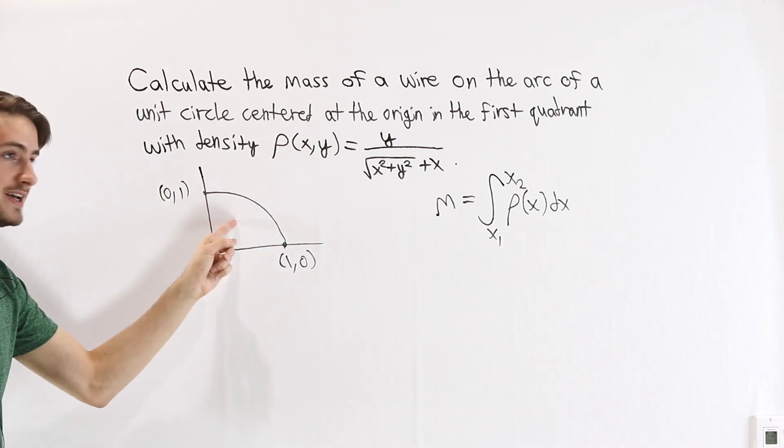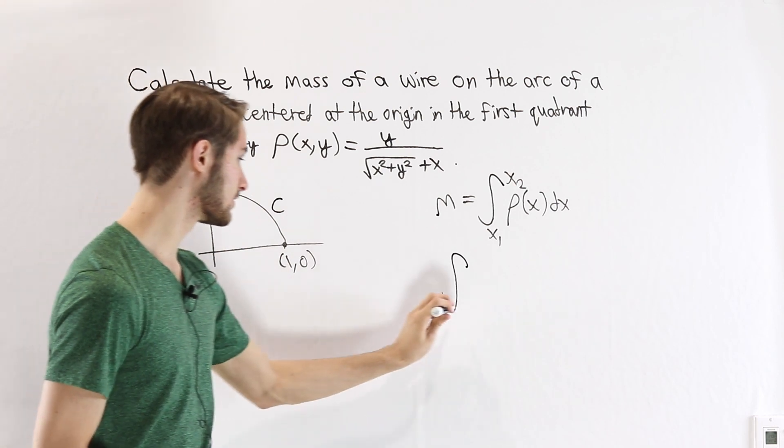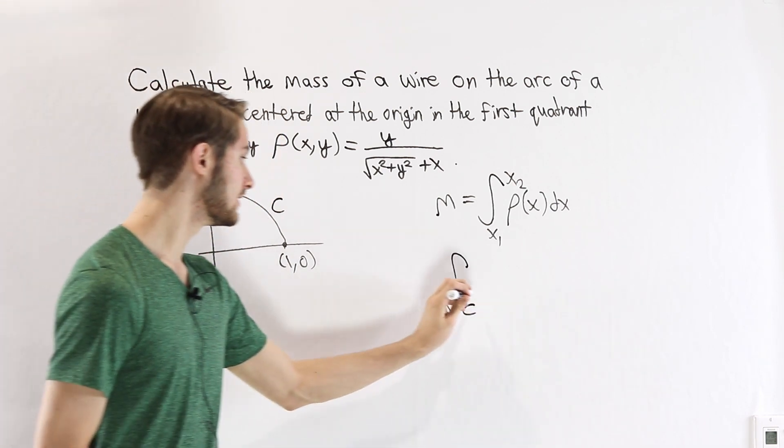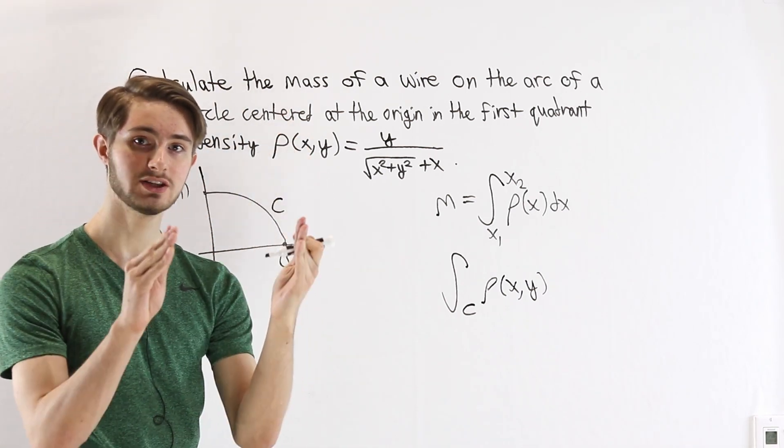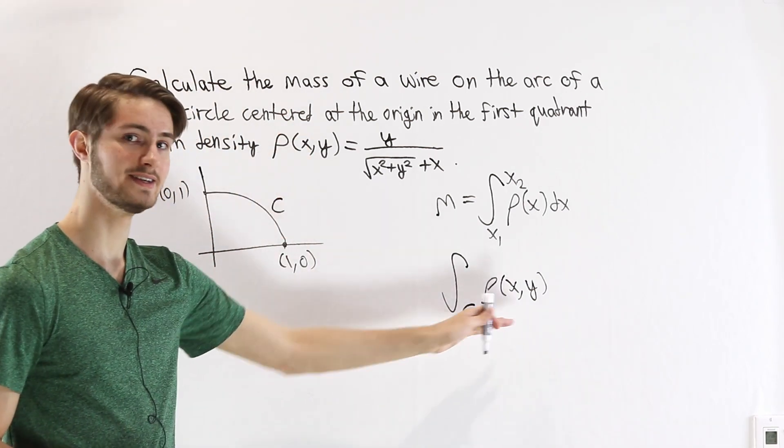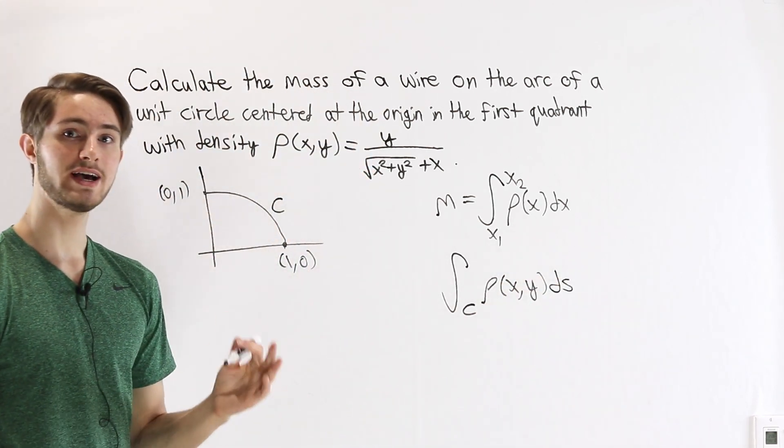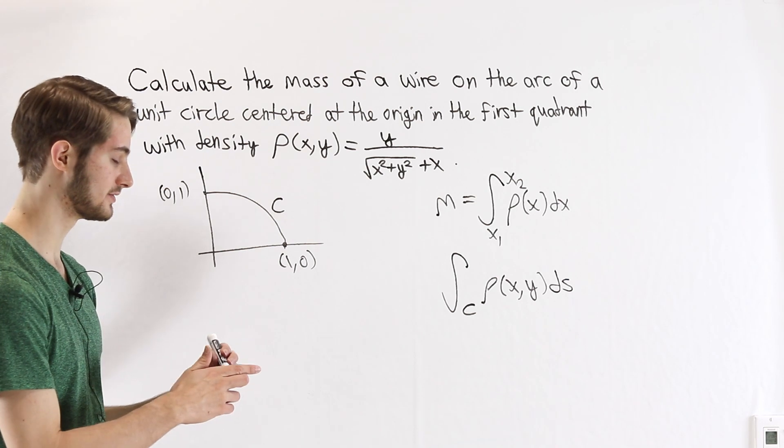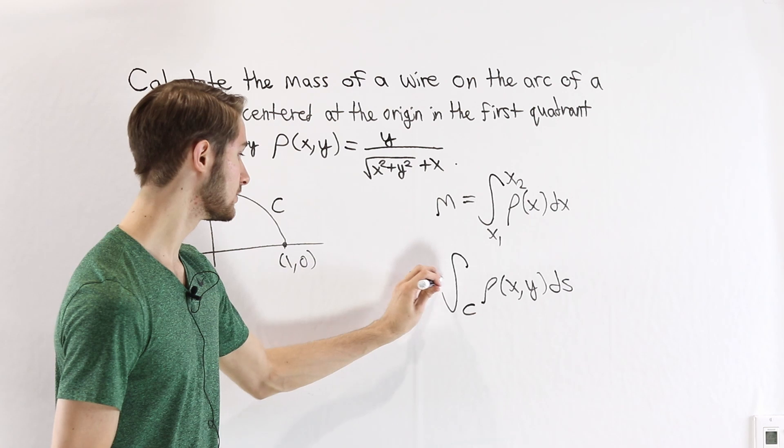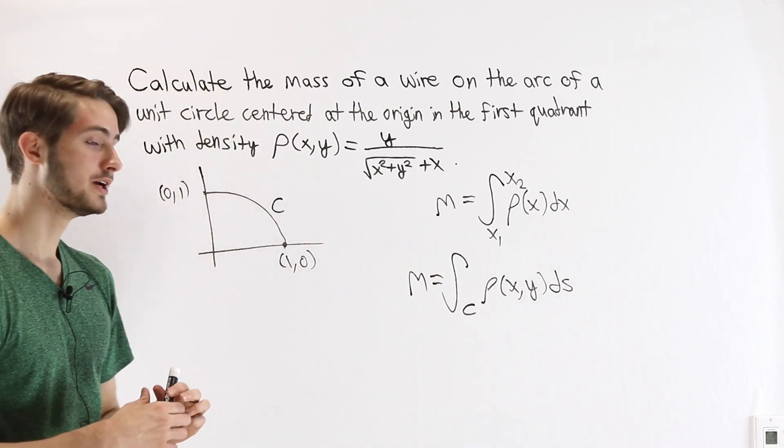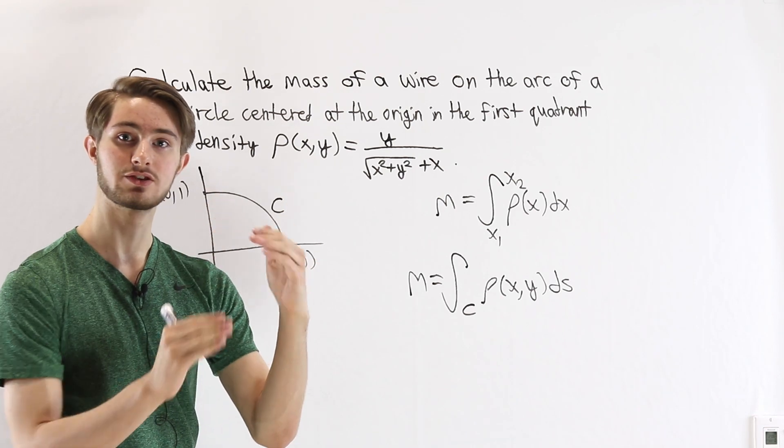We need to take the integral over this curve, if we call it C, of the density function at that particular point times the change in length that corresponds to that density. And the change in length is represented by ds, where s is the arc length of the curve. And here we see where that scalar field line integral comes in. Because we're looking at a multi-dimensional region, we want to consider a scalar function times the change in length with that density.